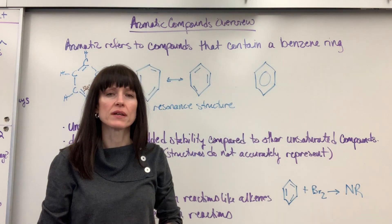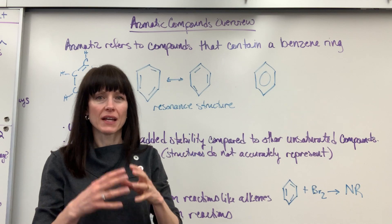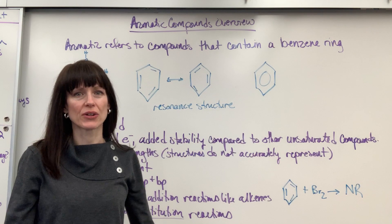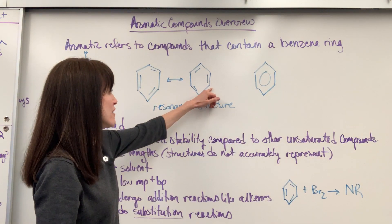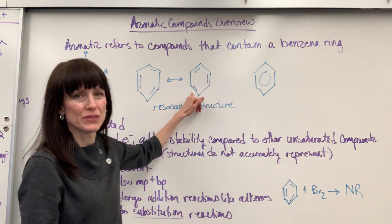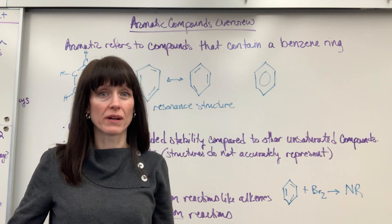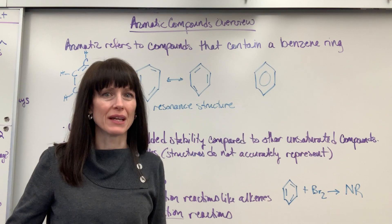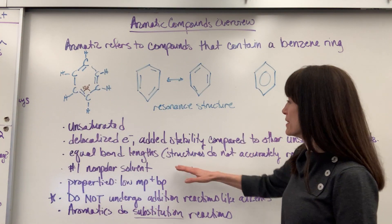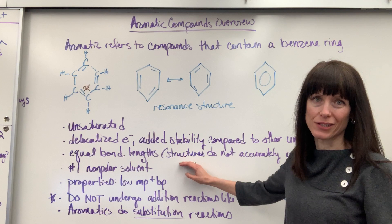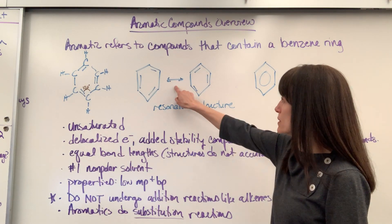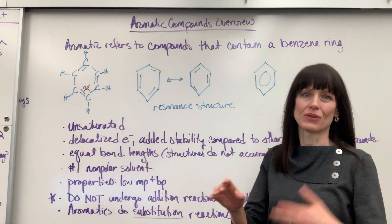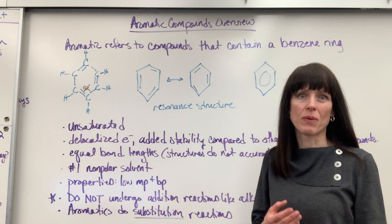Those bonds resonate back and forth, meaning that each of the bonds has the same length. When we draw it with alternating double bonds it doesn't accurately represent it — it looks like there's a bond length of one and a bond length of two, but it's actually going to be about a bond length of one and a half for all of them. So we use a double arrow or a circle to show that they resonate and all have the same bond length.